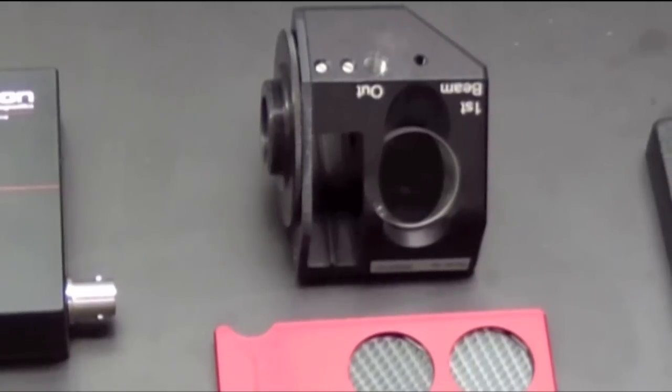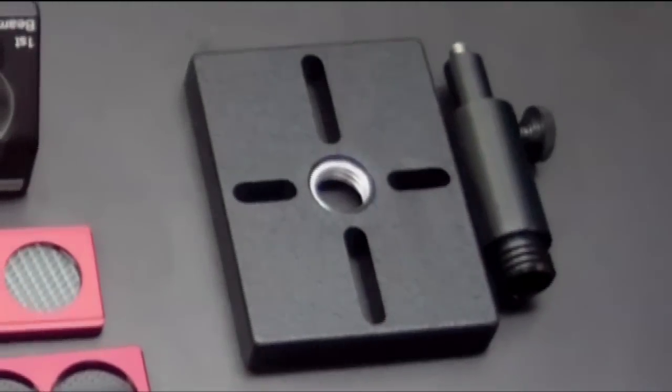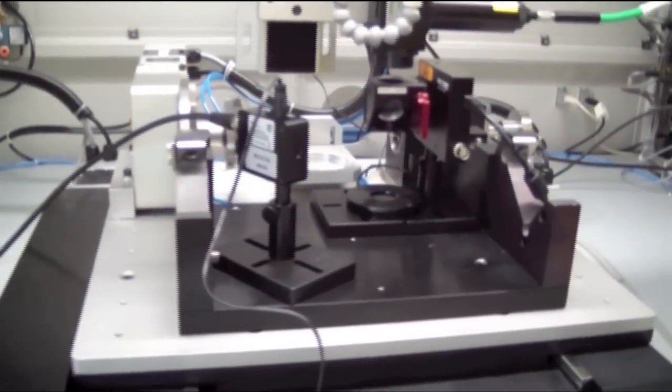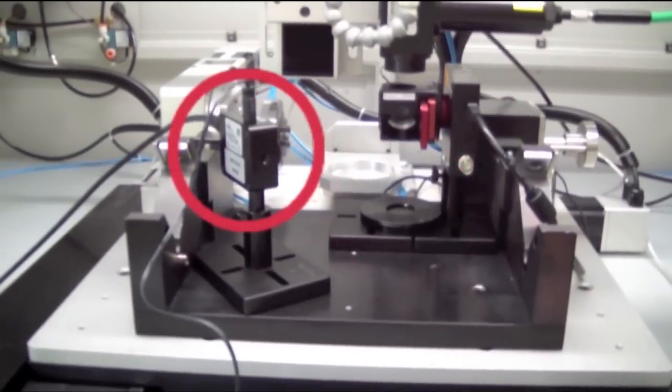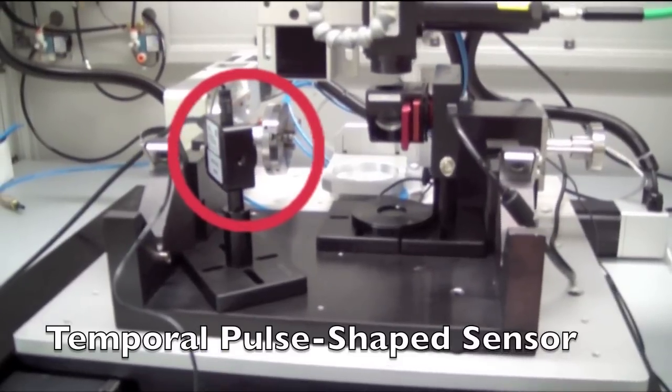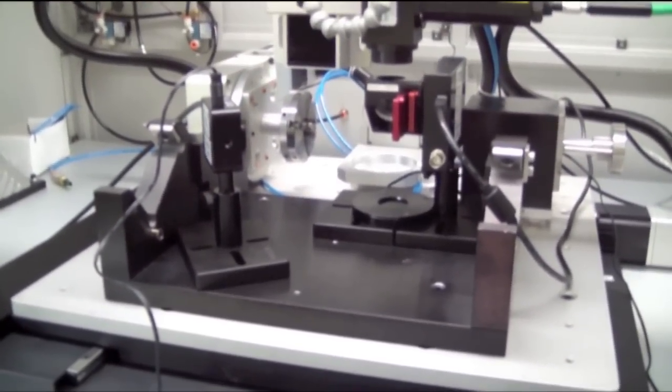We will be using the Spiricon LBS-300 attenuation system, a base, and a stand. We will also show you how to integrate a thermopile energy measurement sensor into the system and utilize a temporal pulse shape measurement system for a complete and comprehensive laser characterization package.